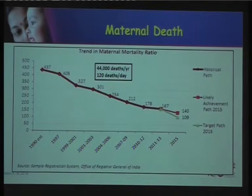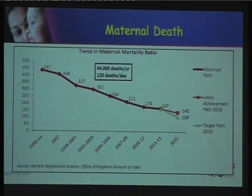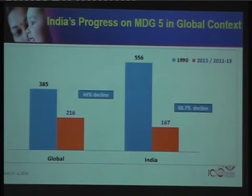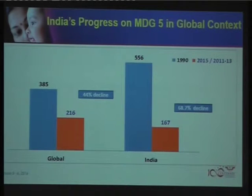Maternal deaths in India were really high over the last decade. We have made progress — currently the rate is 167, based on 2011–13 data. For 2015 we do not yet have the figures, but we expect it to be around 140, which is still much higher than the MDG target of 109. Globally there has been a 44% decline in maternal mortality, while in India there has been a decline of 68.7%, partly because our figures were very high to begin with.